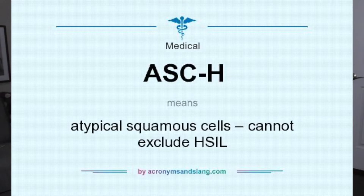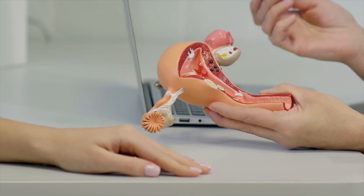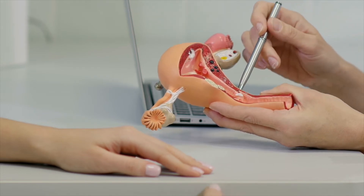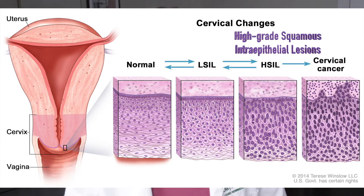What if your pap smear lists ASC-H, or atypical squamous cells and cannot exclude HSIL? It means there are abnormal cells in the tissue that lines the outer part of the cervix. This may be a sign of high-grade squamous intraepithelial lesion, or HSIL, which may turn into cancer if untreated. Your practitioner may not know for certain if you have high-grade lesions, and it is likely they will schedule you for a colposcopy.